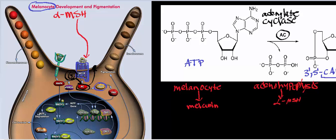There's another protein called protein kinase A, and what cyclic AMP is able to do is activate protein kinase A — abbreviated PKA. When cyclic AMP starts to rise in the cytosol of the melanocyte, or any cell for that matter, it tends to activate protein kinase A.